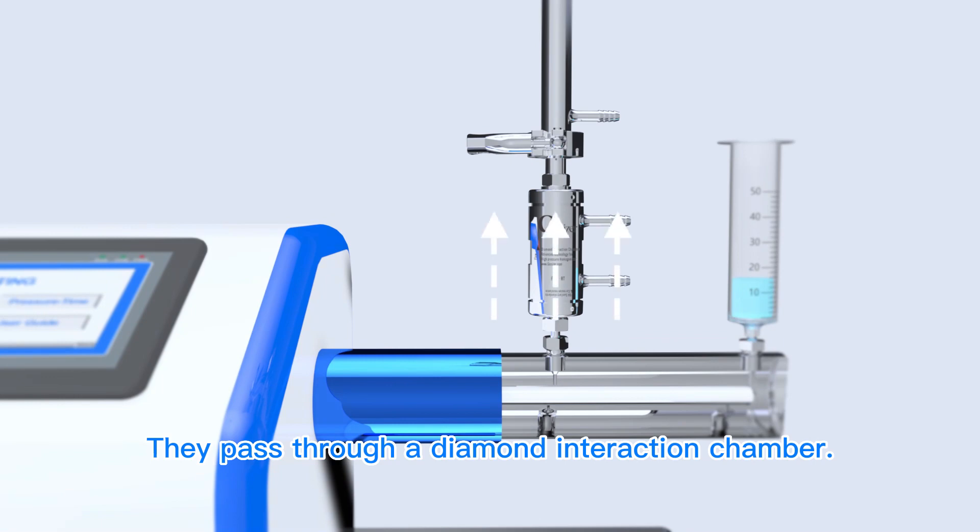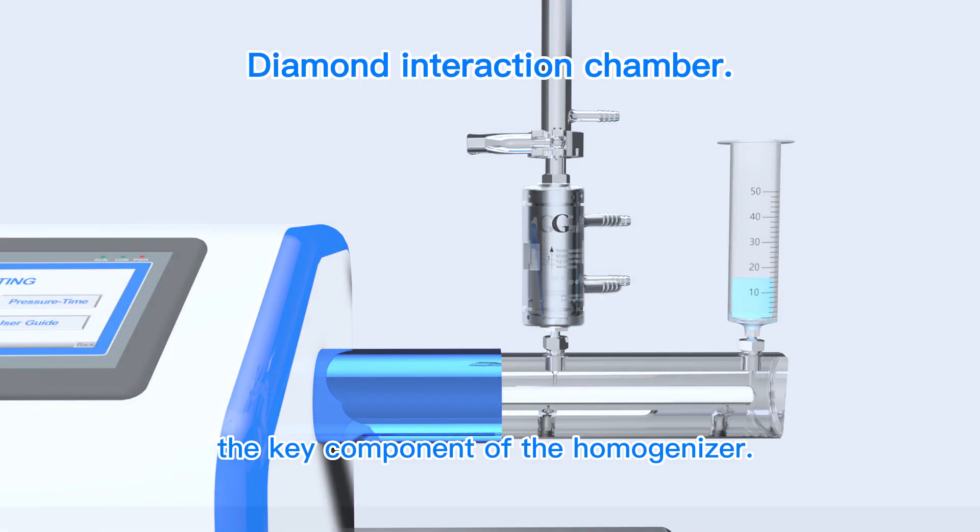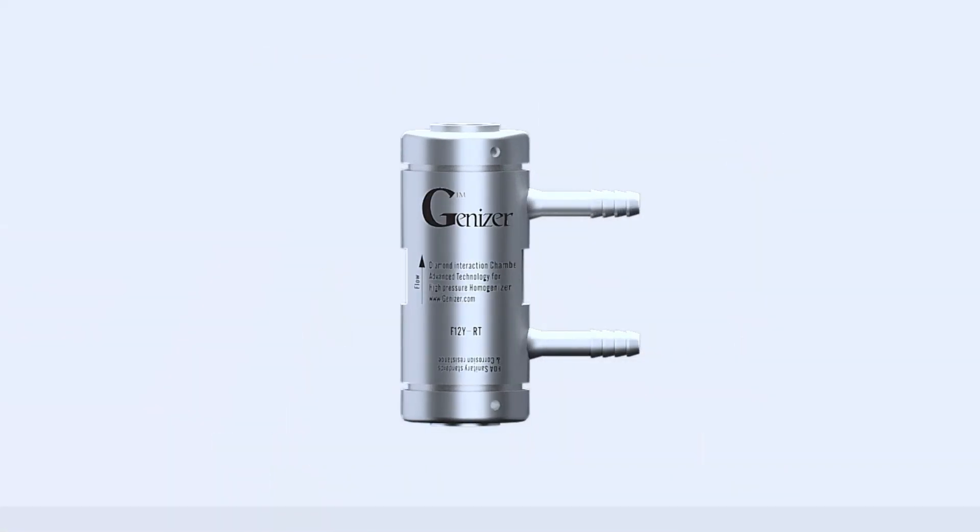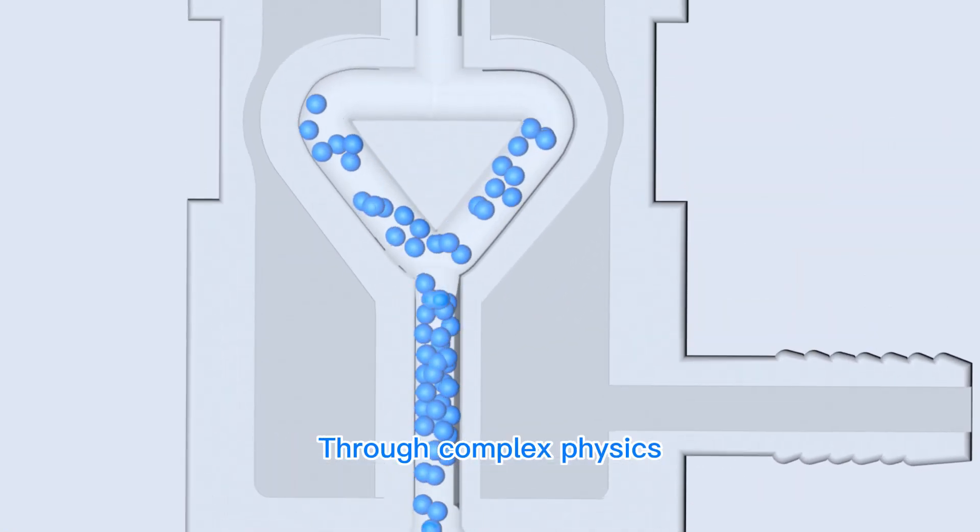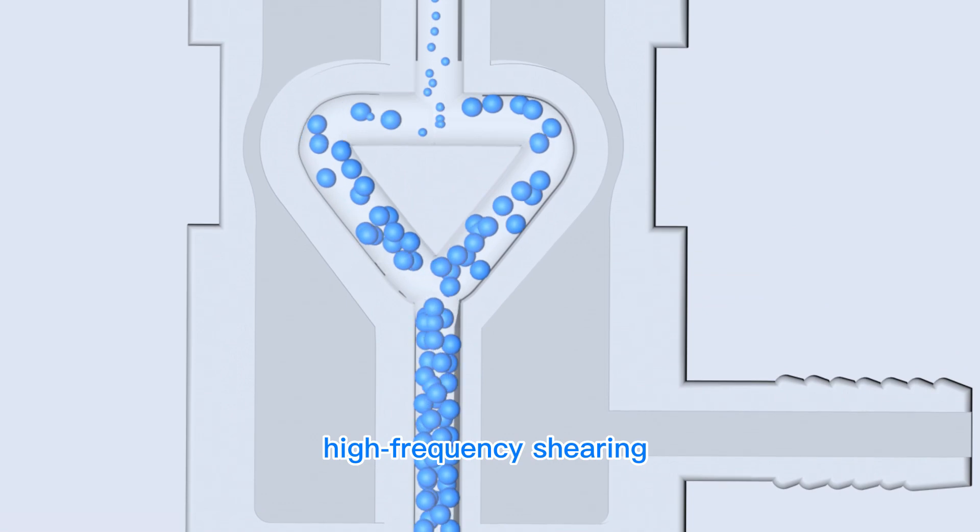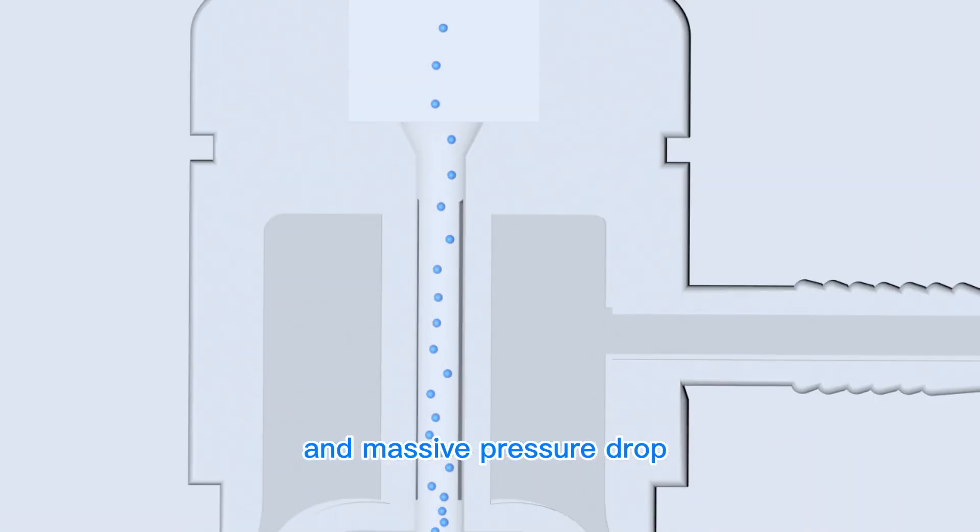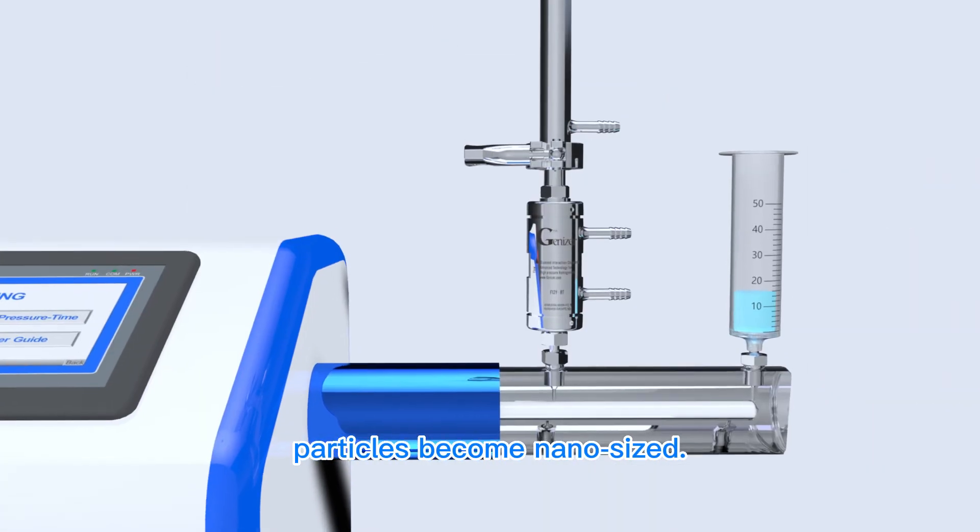They pass through a diamond interaction chamber, the key component of the homogenizer. Inside, it features fixed diamond microchannels. Through complex physics, high-frequency shearing cavitation effects and massive pressure drop, particles become nano-sized.